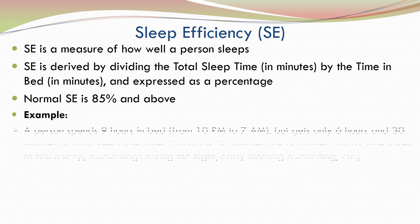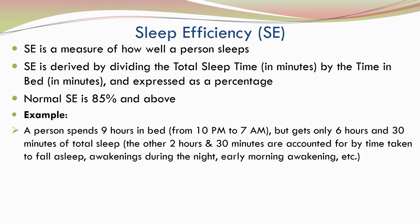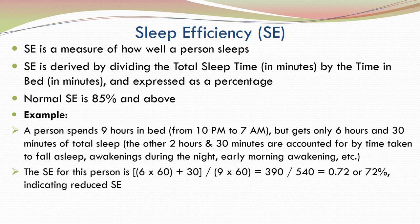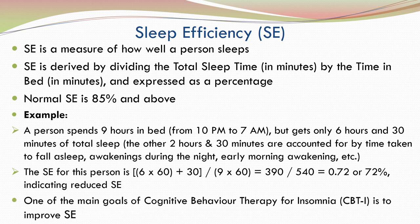Let us look at an example. A person spends 9 hours in bed but gets only 6 hours and 30 minutes of total sleep. The sleep efficiency for this person can be calculated using the formula mentioned previously, giving a value of 72%, indicating a reduced sleep efficiency. One of the main goals of cognitive behaviour therapy for insomnia, or CBTI, is to improve sleep efficiency.